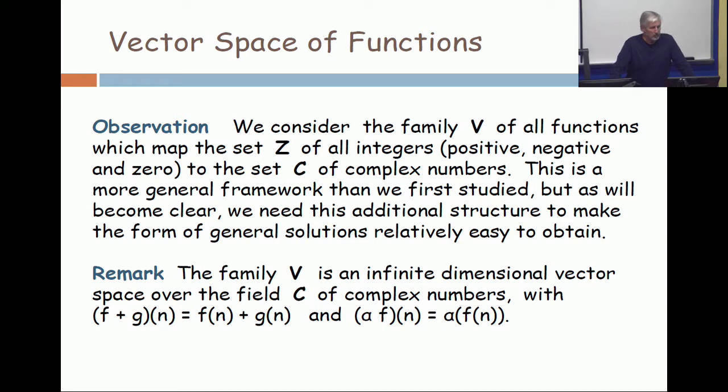You can add those functions together, you can subtract them, you can multiply them by a constant. There's a zero function—the zero function maps every integer to the complex number zero. So you get a vector space. That vector space is infinite dimensional. There is no finite basis for it, but we're going to be studying subspaces that are finite dimensional.